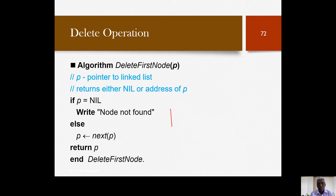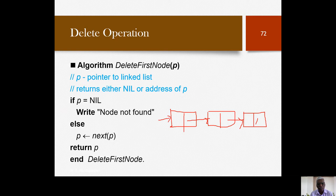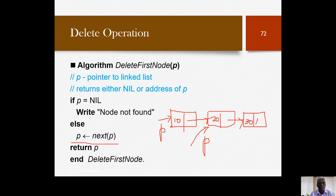We are given a singly linked list. Let's assume a simple example with just three nodes having info fields 10, 20, and 30. The idea is that the first node has to be deleted. All we need to do is push p forward — p has to be altered so that it points to the next node. P should take the address of next of p — that is the address of the next node.